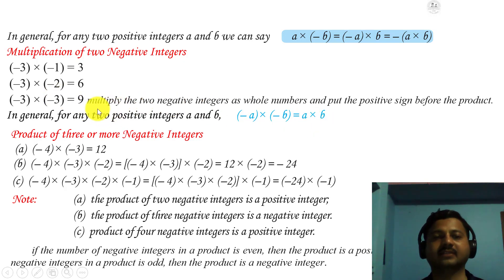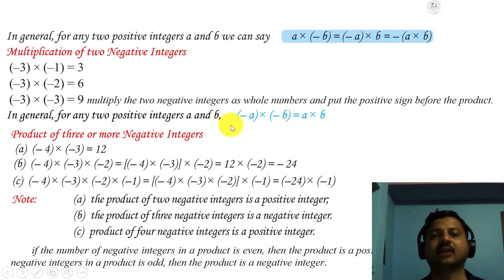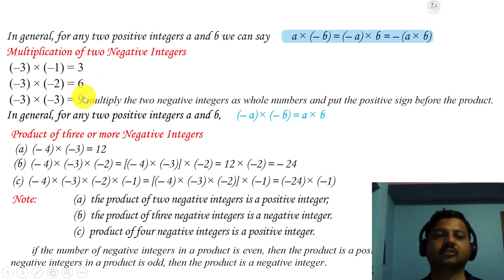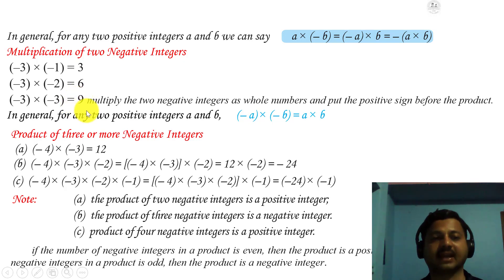For example, minus 3 into minus 3: treat them as whole numbers — 3 threes are 9. We write 9 and put the positive sign before the product, so the answer is positive 9. Even if no sign is written, we consider it as plus 9.